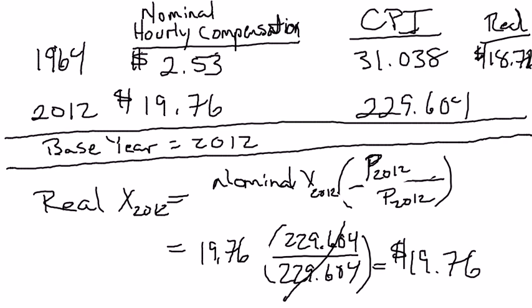So what you see here is that real wages increased not much at all — just a little over a dollar an hour over almost 50 years. That's an extremely slow rate of increase in hourly real wages. These figures are just for a subset of the workforce — non-supervisory production workers — and they don't take into account changes in hours of work or other forms of compensation such as healthcare costs.